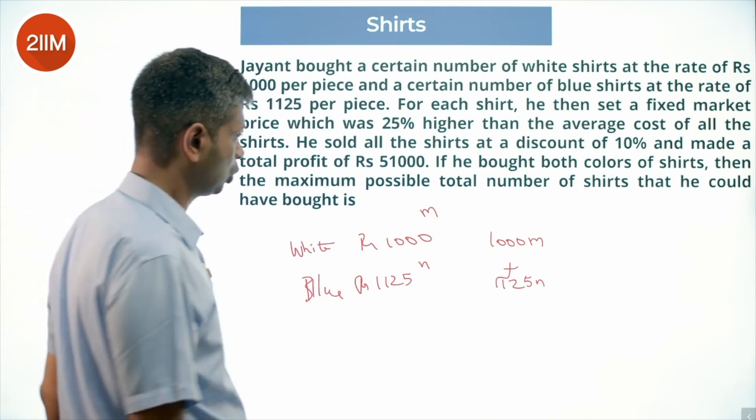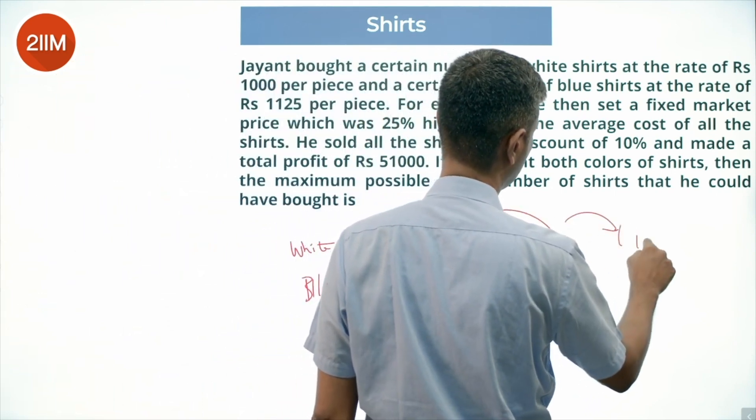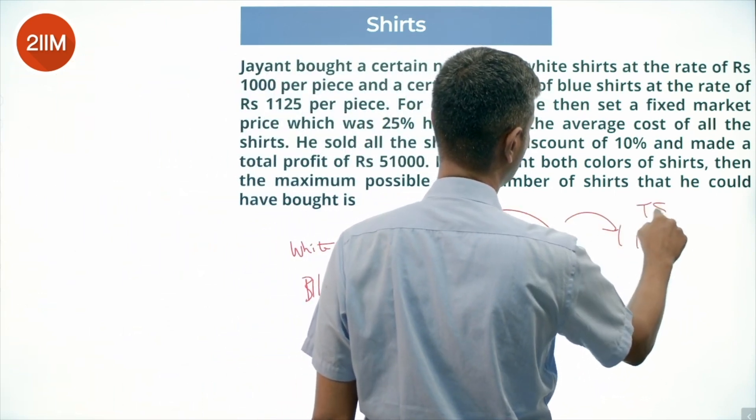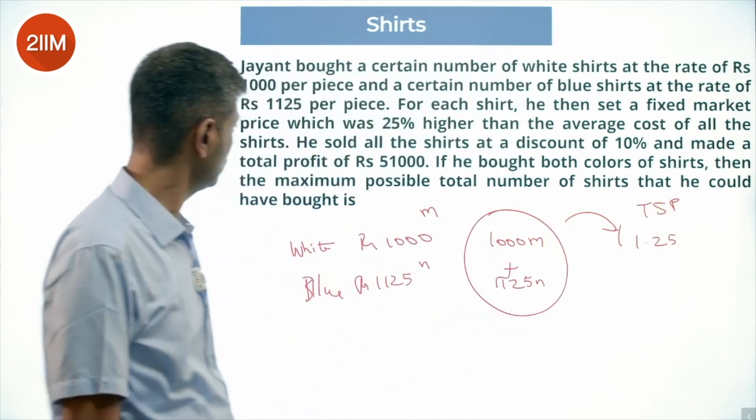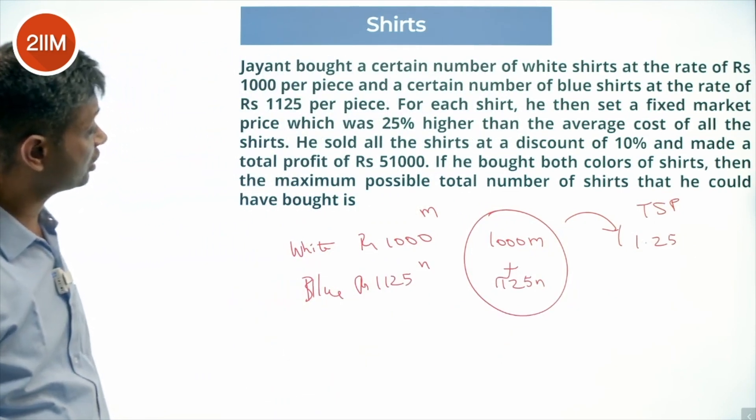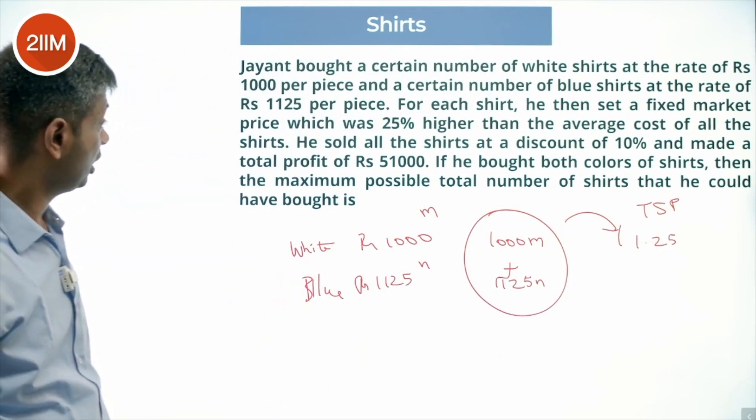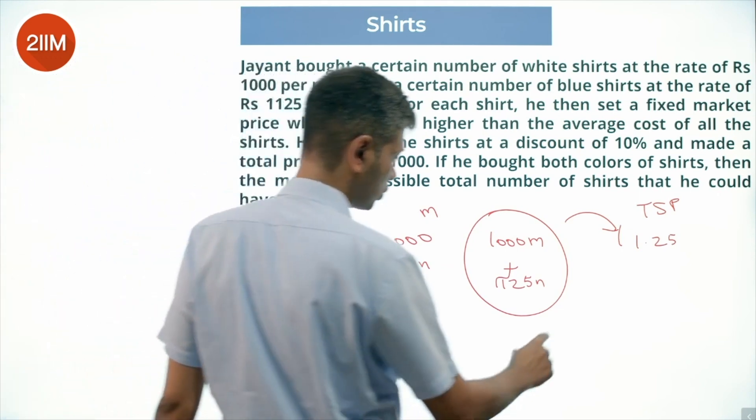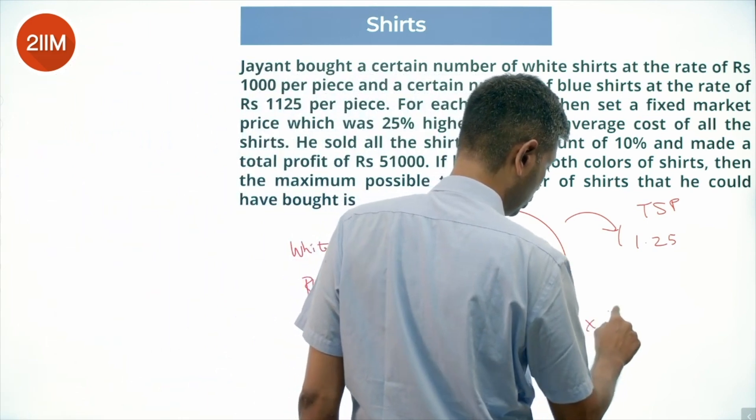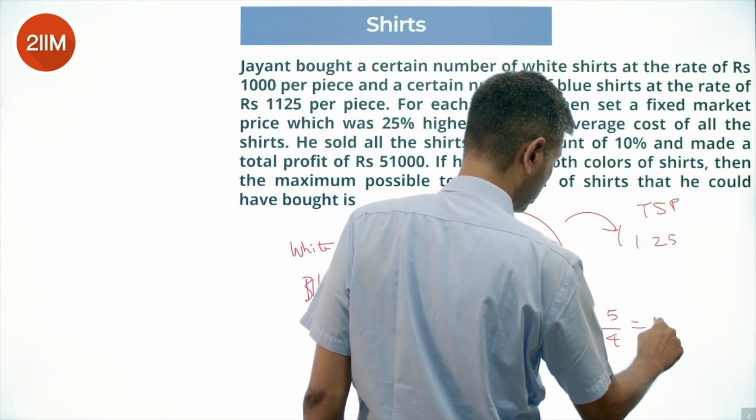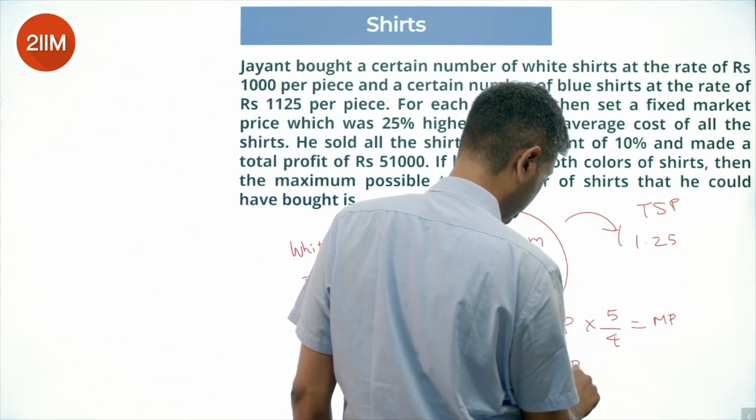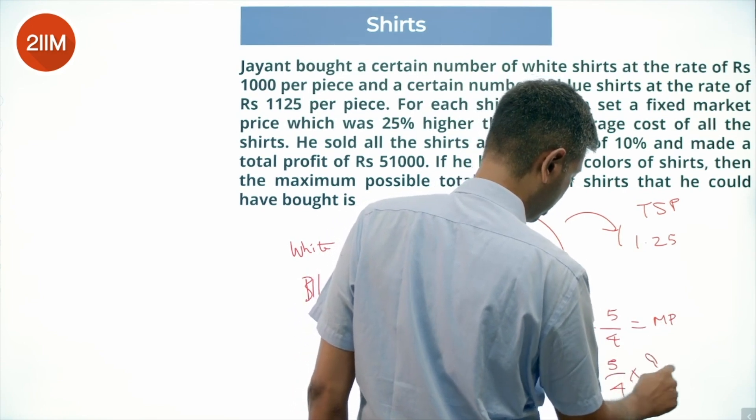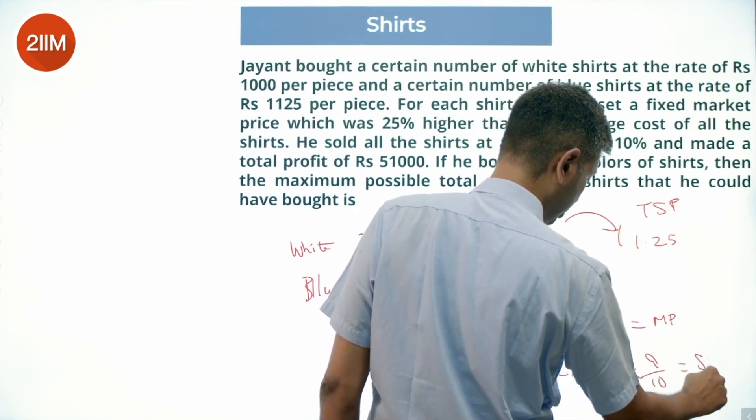So the total cost times 1.25 gives the total marked price. He then sold all shirts at a discount of 10% and made a total profit of Rs 51,000. Cost price times 5/4 equals marked price. Cost price times 5/4 times 9/10 equals selling price.